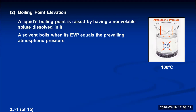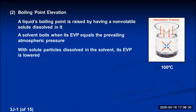What happens to the water if you dissolve a solute in it? The first colligative property we talked about last time is vapor pressure lowering. All those solute particles in the liquid cause the liquid's vapor pressure to be lower. So with solute particles dissolved in the solvent, its EVP is lowered. We can represent that by shrinking down these blue arrows. If the pressure inside the bubble is less than atmospheric, the atmospheric pressure squeezes the bubble down to nothing, and therefore no bubbles can form. So at 100 degrees, the liquid stops boiling because the bubbles disappear.